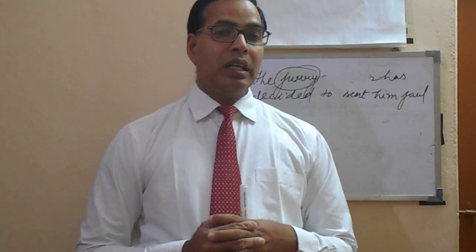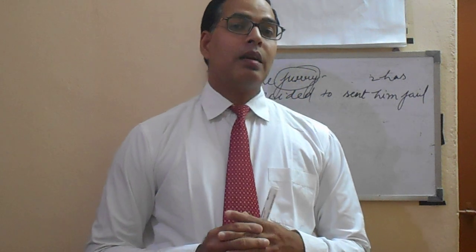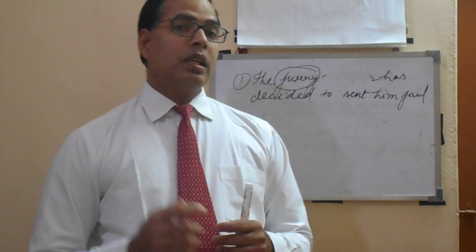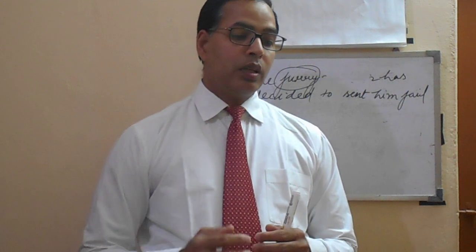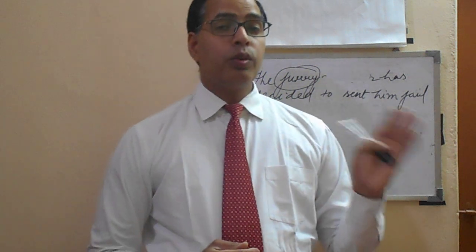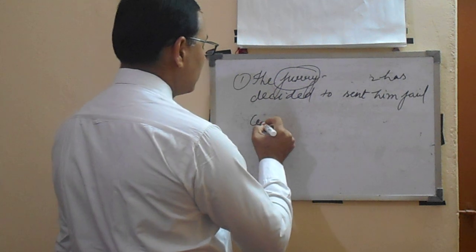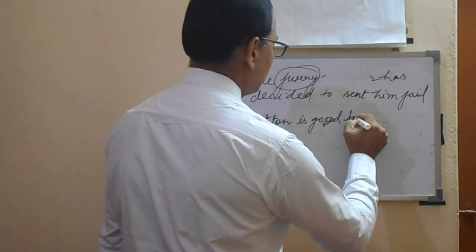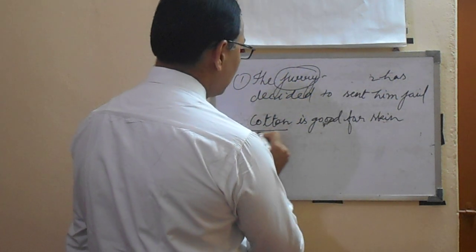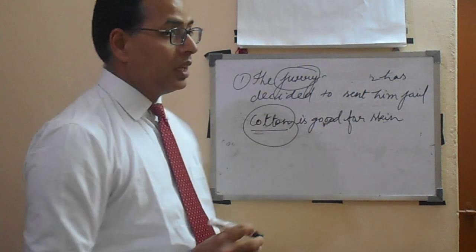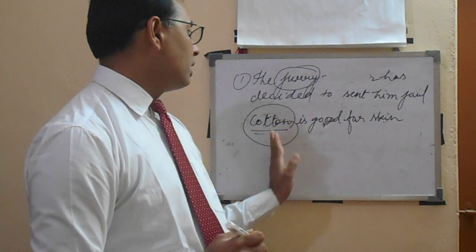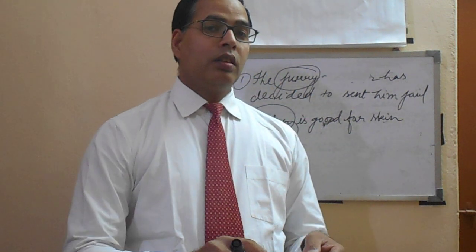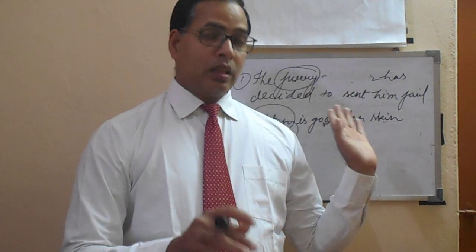Qualities — for example, bravery is a quality, kindness is a quality. Under action, 'love' is an action. Under state, 'brotherhood' and 'boyhood' are states — that is why they are abstract nouns. Material noun is the name of a material. It refers to material things. For example: cotton is good for skin — cotton is a material noun because it is made of material.